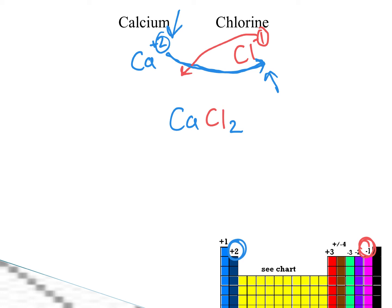Remember our rules. The first one gets to keep its name. Calcium remains calcium. The second one has to have that IDE ending. So chlorine is going to become chloride. Note, the IDE ending. So calcium chloride is CaCl2. We have the right formula. We have the right name. We are doing good.